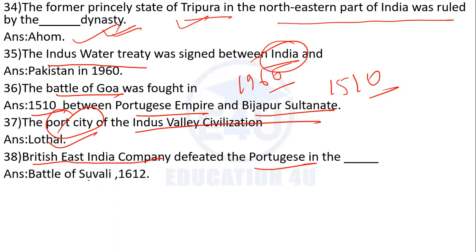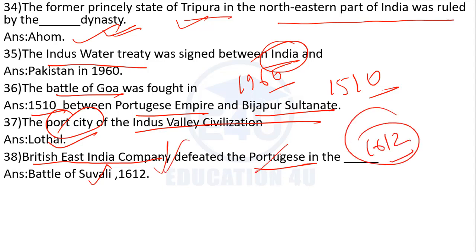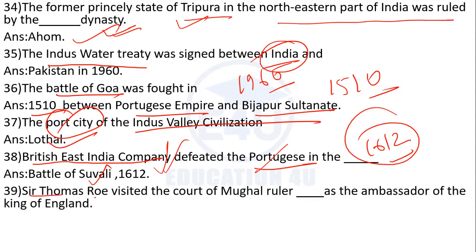The Battle of Suvali was in 1612 between the British East India Company and the Portuguese. Sir Thomas Roe visited the court of the Mughal ruler as the ambassador of the King of England, and the answer is Jahangir.